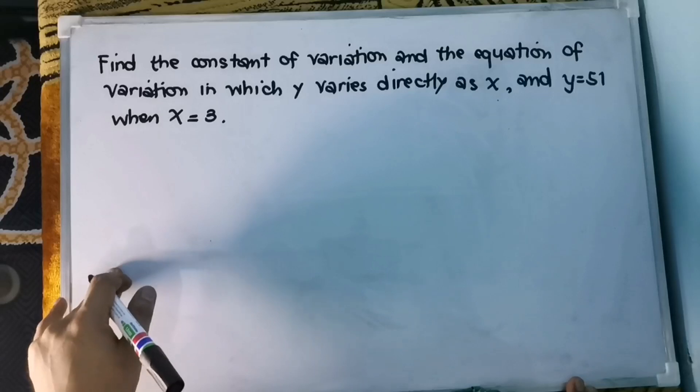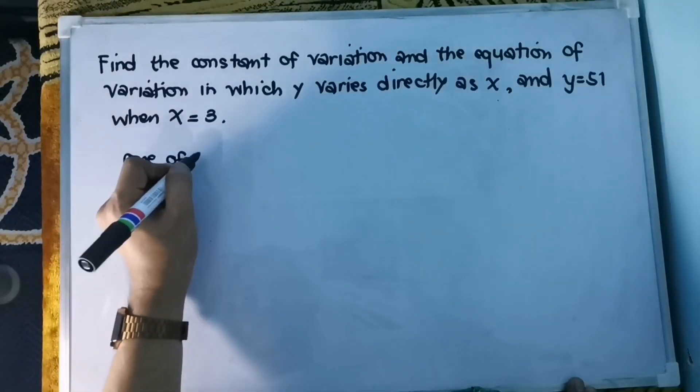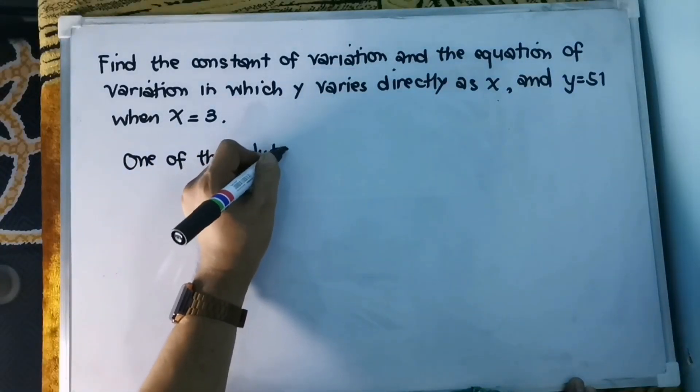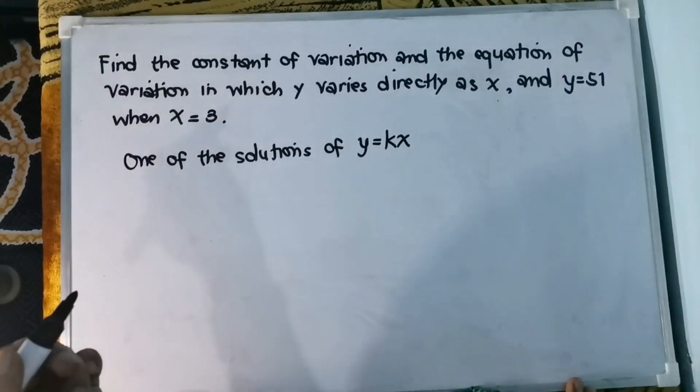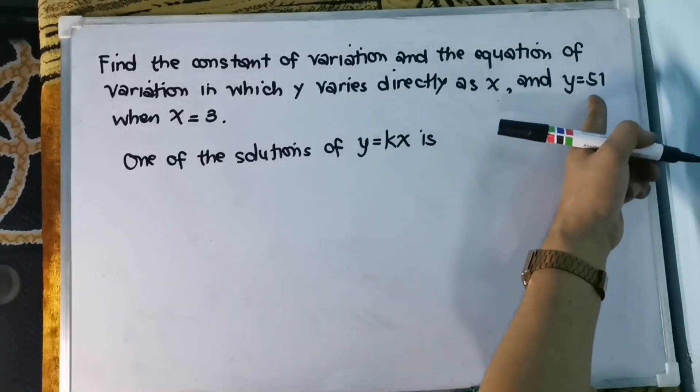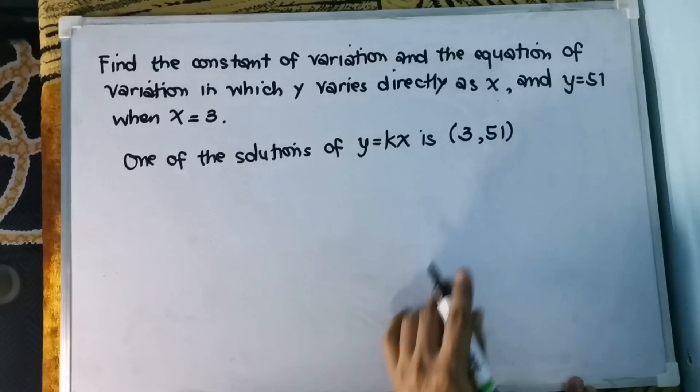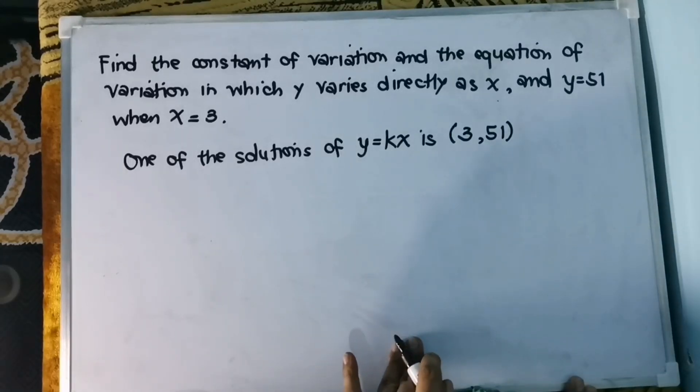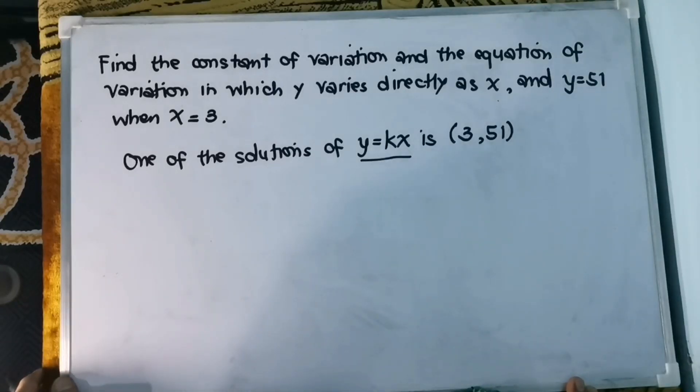We can write the equation of variation as y equals kx. One of the solutions of y equals kx is, it says here that y equals 51 and then x equals 3. So we can write it as an ordered pair 3, 51. That is one of the solutions. We are asked to find the constant of variation and the equation. This will be the equation of variation. So let us find k.